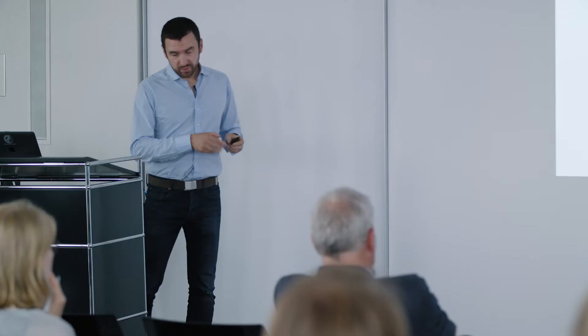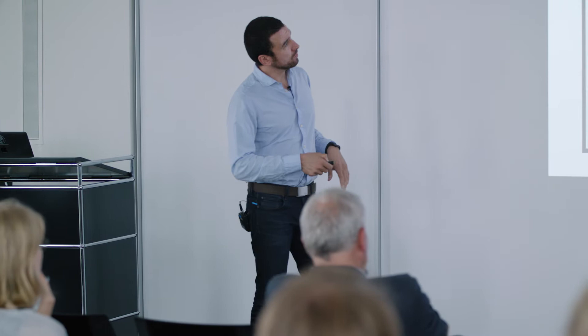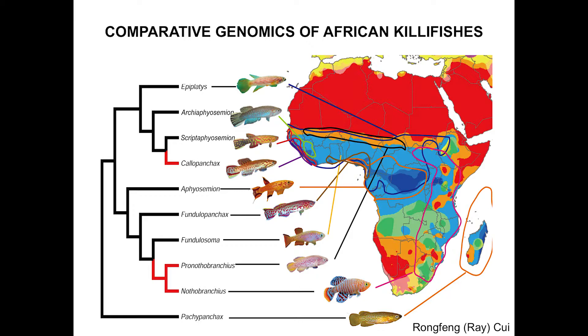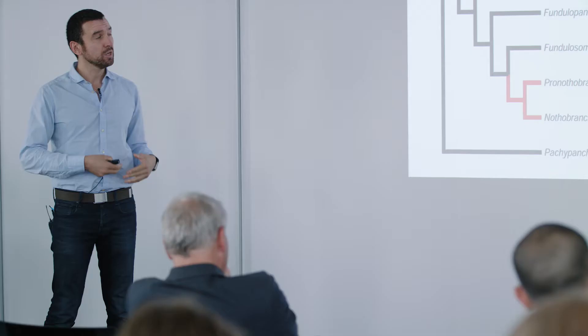I'd like to spend a few minutes talking about other killifish in Africa. Not only the turquoise killifish is short-lived — there are other instances where short lifespan emerged in this clade. The red branches of this phylogenetic tree represent annualism as a phenotype that evolved — meaning short lifespan and embryonic diapause. This didn't happen once, but many times in the phylogeny of these fish. The question is: what genomic events underlie the evolution of this very peculiar trait? How do you become short-lived?